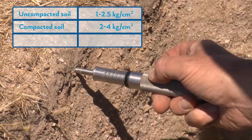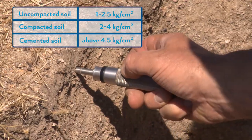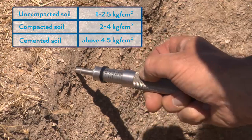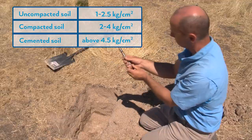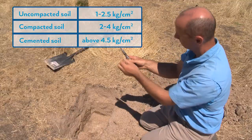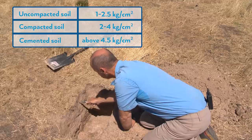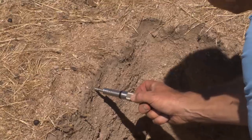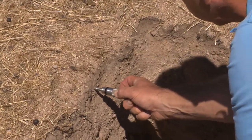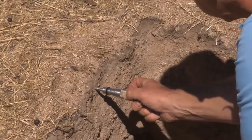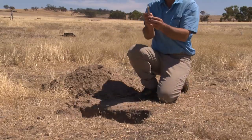You can see that basically we cannot overcome the resistance of the surface soil, even 2 or 3 centimeters below the surface. Here we are at 5 kilograms per square centimeter, which is the maximum recording of this device. The actual soil resistance will be much higher.